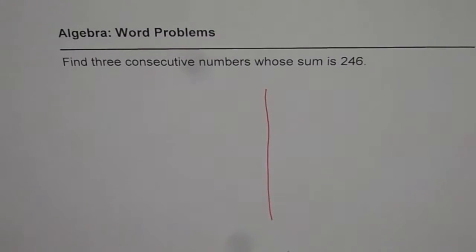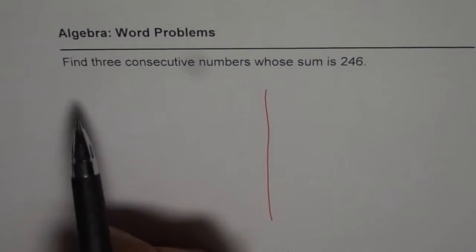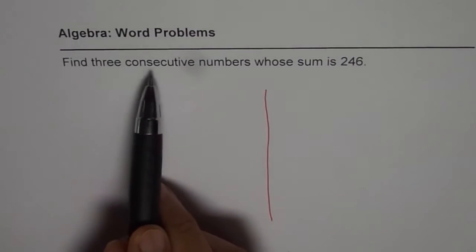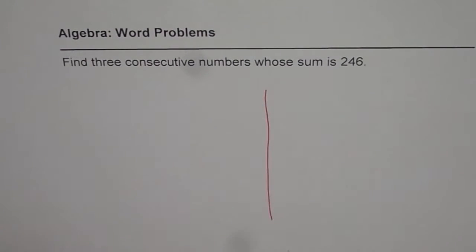It's kind of important to understand how to define consecutive numbers. The question here is: find three consecutive numbers whose sum is 246.